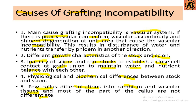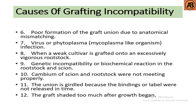Additional causes of grafting incompatibility include: poor formation of the graft union due to anatomical mismatching; virus or phytoplasma infection; weak cultivar; genetic incompatibility or biochemical reaction; cambium of scion and rootstock not meeting properly; the union being guarded because the bindings or tapes are not released — guarded meaning phloem degeneration; and the graft being shaded too much after growth began.